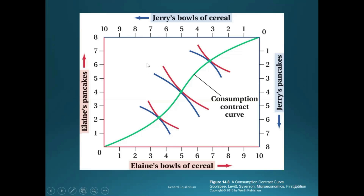There are many different exchange efficient outcomes, including those where Elaine gets nothing and is starving. This highlights the fact that efficiency does not necessarily serve as an argument that an allocation is the best one. But what we know is that if you start at a point that is not on the consumption contract curve, it is not an efficient allocation, which means there must be some other point on the contract curve preferred by at least one consumer without making either worse off. At a minimum, we want exchange efficiency, but it doesn't imply we've reached the best outcome. However, if we do not have exchange efficiency, there is something better — and that is something we can all agree on.